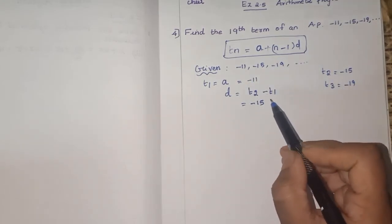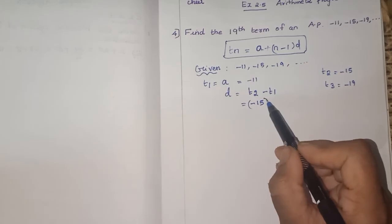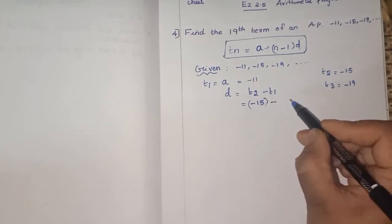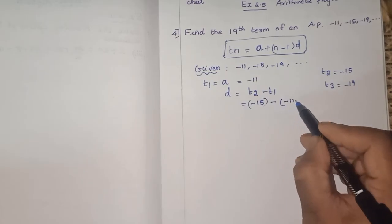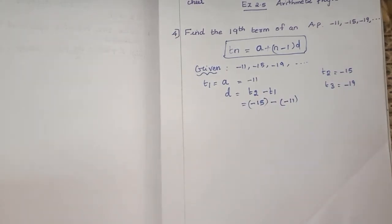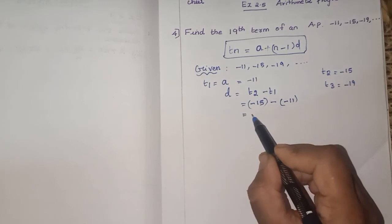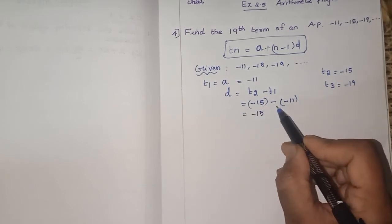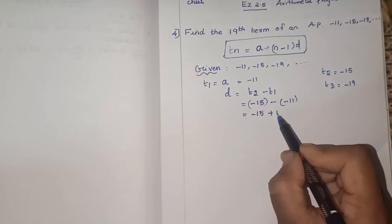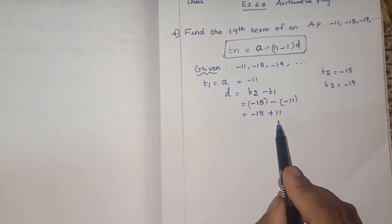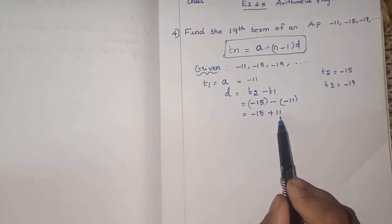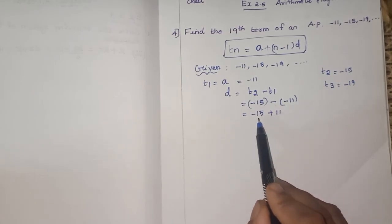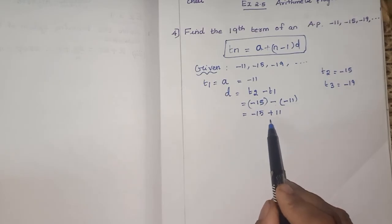Now there is a negative sign, we are going to subtract. So minus 15 minus of what? T1 is also a negative integer, minus 11. So put it in the bracket whenever you have negative integer. So now what will happen? Minus 15, this minus minus becomes plus 11. So how will you add a negative integer and a positive integer? A negative integer with a negative sign and positive integers, you have to subtract it.